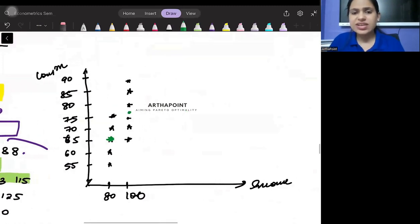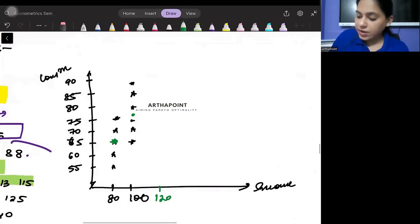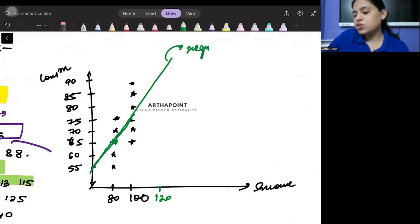This is only a rough estimate. In the exam you will never get to do this previous work, it has to be work of mind, but still you should know how the plotting happens. Then again you will do it for 120 and so on. You will join all such points and you will get your regression line.